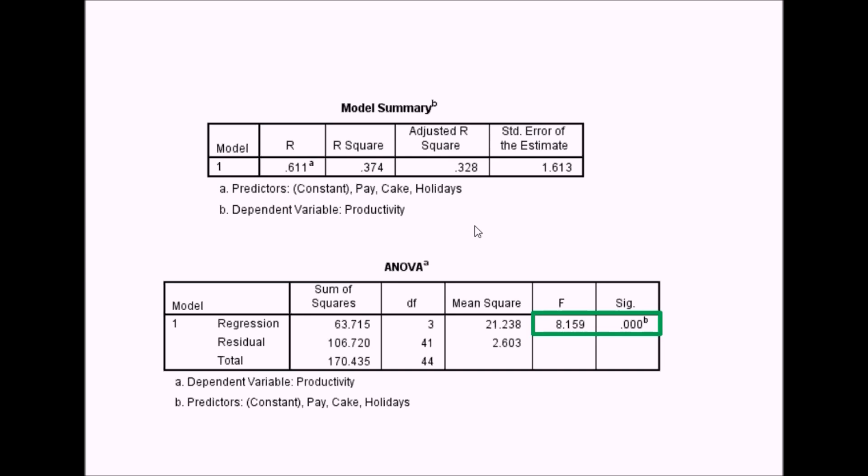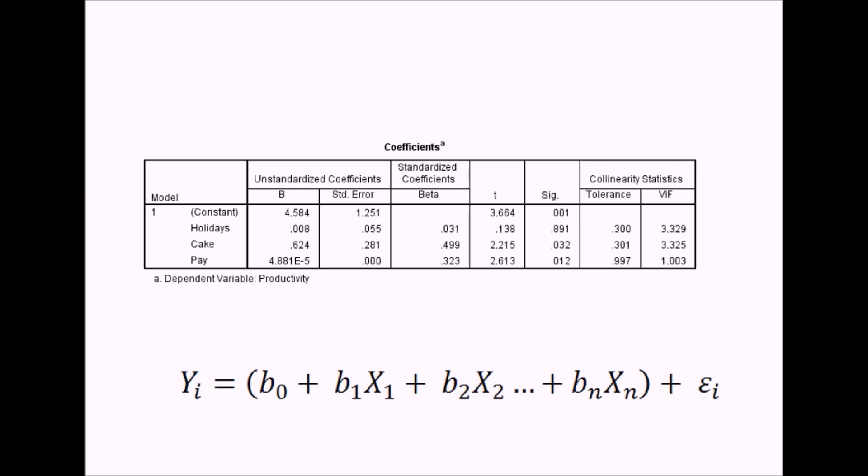We can then go on to the coefficients table and have a look at this. In simple regression, we just had one variable in this table. In multiple regression, we've got all the variables. What we can do with this table is compare the relative importance of each of these variables in the model. Does one predict productivity better than the others? We'll start off with the unstandardized coefficients. You can look at the constant here. In simple regression, this is the point at which the regression line crosses the y-axis, or the point at which you start drawing that line. In multiple regression, we have to start thinking multidimensionally now and imagine it more of a regression plane than a regression line, but it still cuts the y-axis at one particular point. In this case, 4.58. This corresponds to this bit of the regression formula, which is the b0 coefficient for the constant.